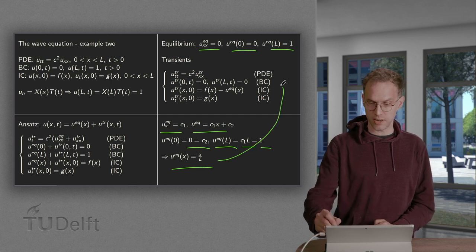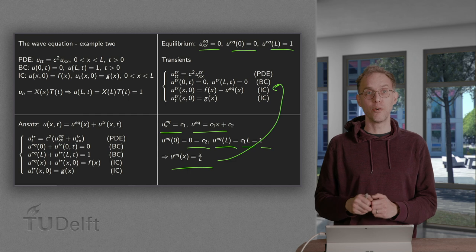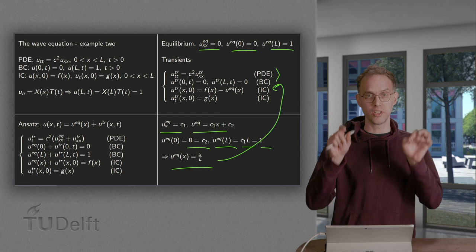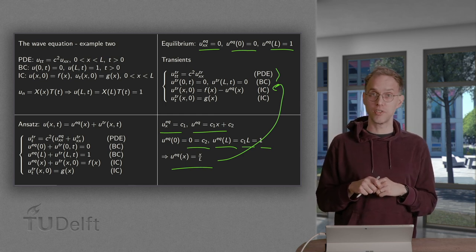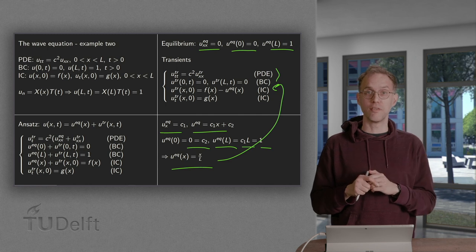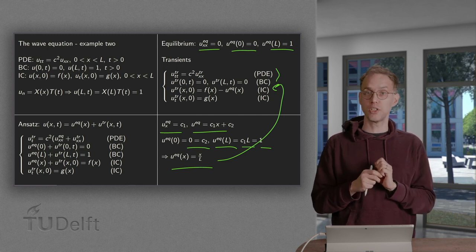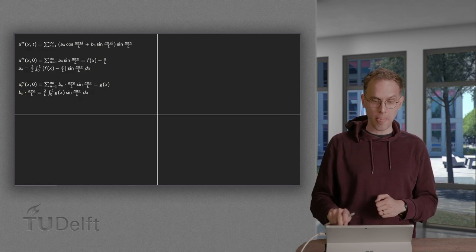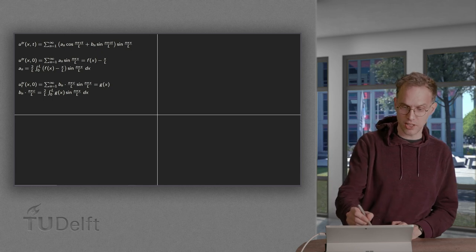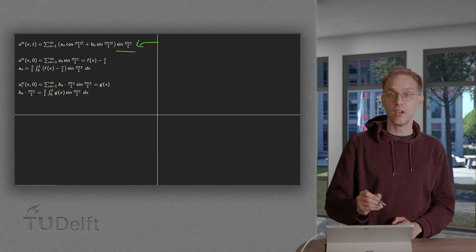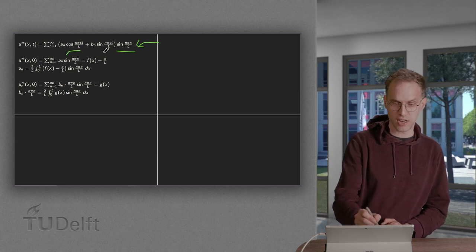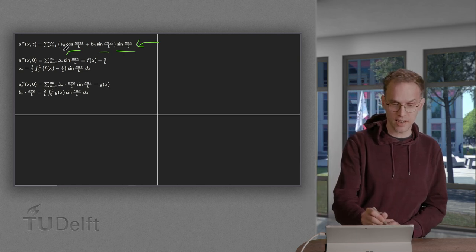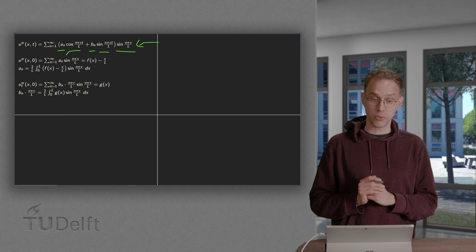Now we can substitute the equilibrium solution into the initial condition and solve the wave equation for the transients. With boundary conditions 0 at x = 0 and x = l, we get sin(n*pi*x/l) for the spatial behavior. Since it's the wave equation, we get sines and cosines for the temporal behavior, which gives us our transient solution.